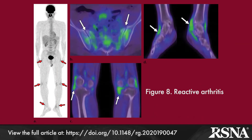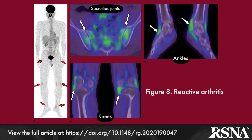Reactive arthritis is a sterile arthritis and enthesopathy of the distal lower extremities that follows enteric or urogenital infection, and like ankylosing spondylitis, is associated with males and HLA-B27 positivity.